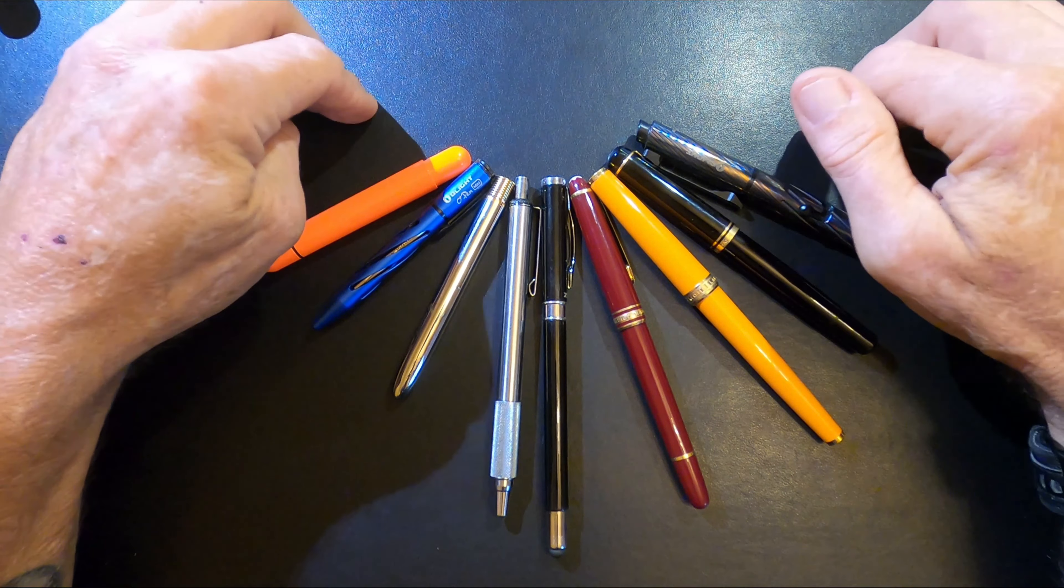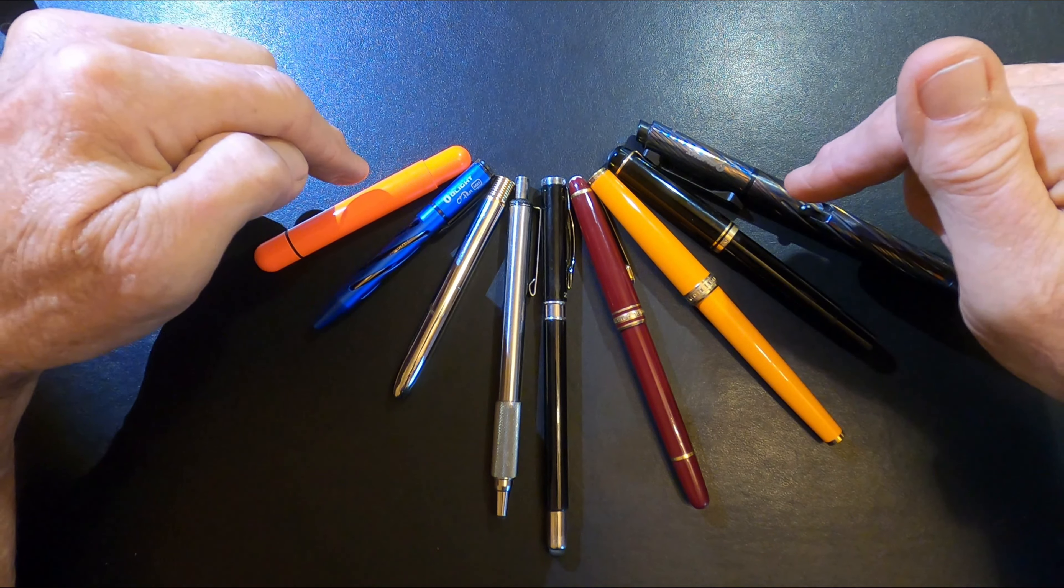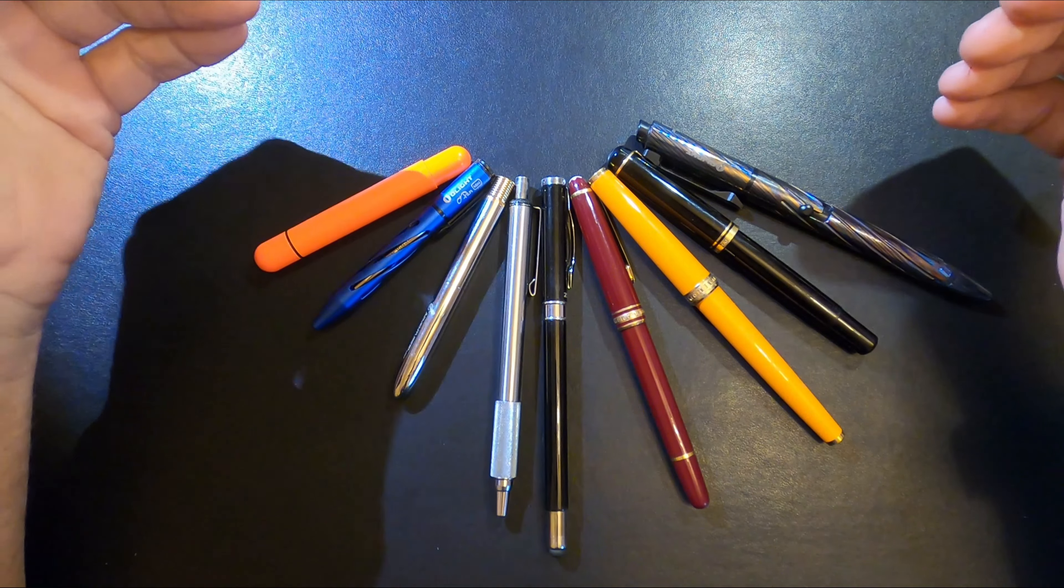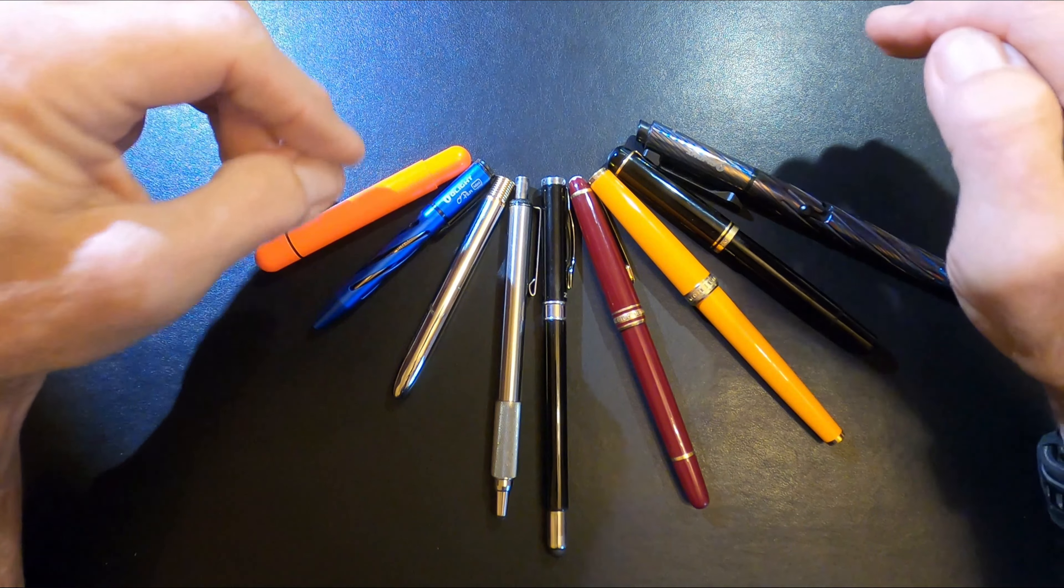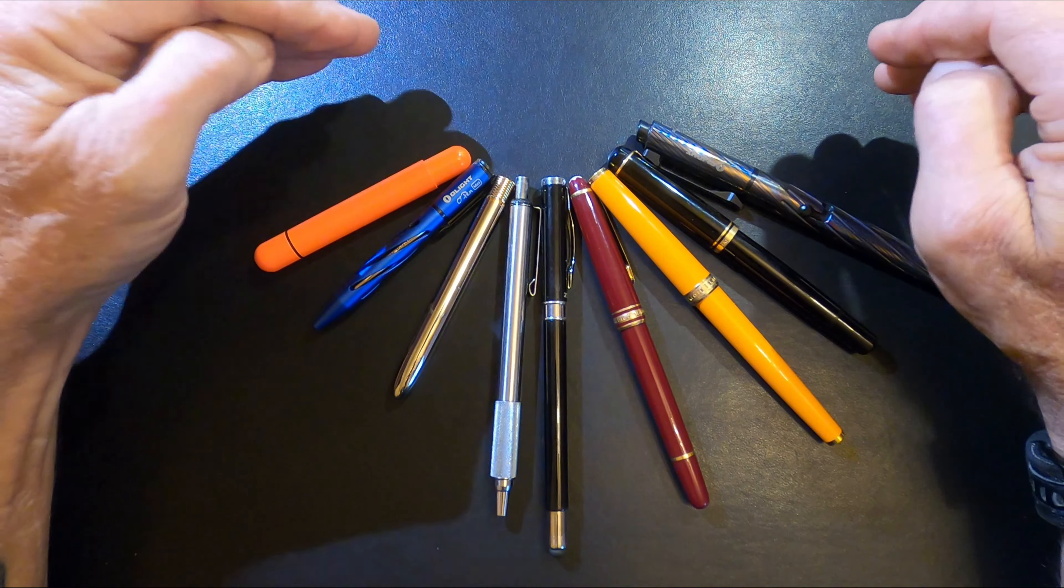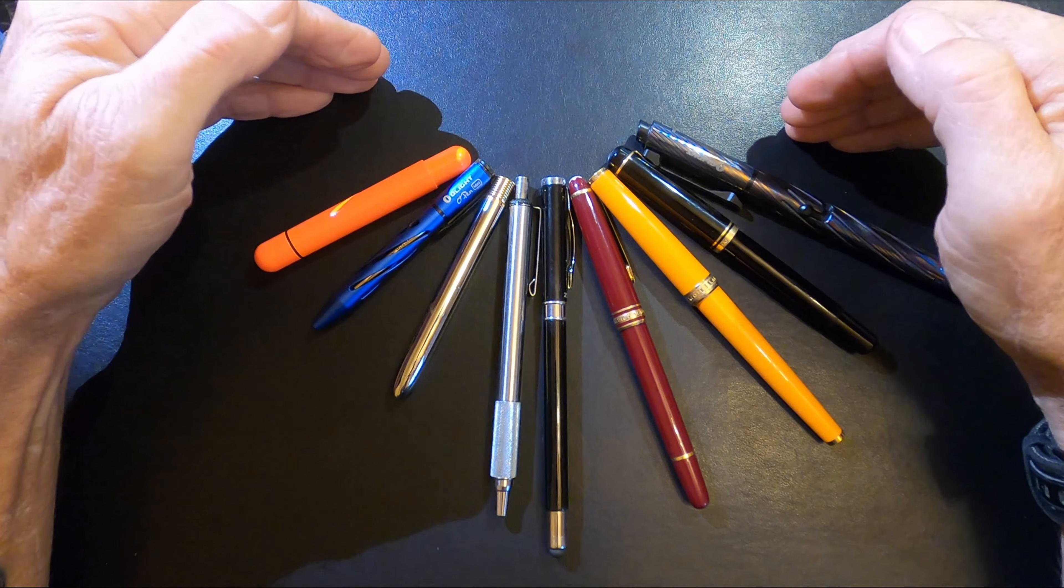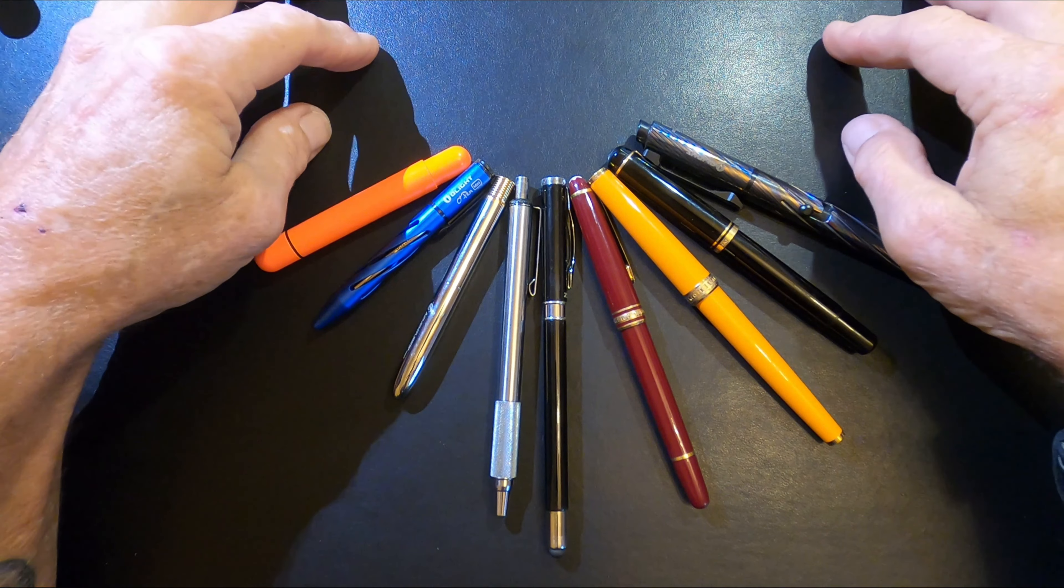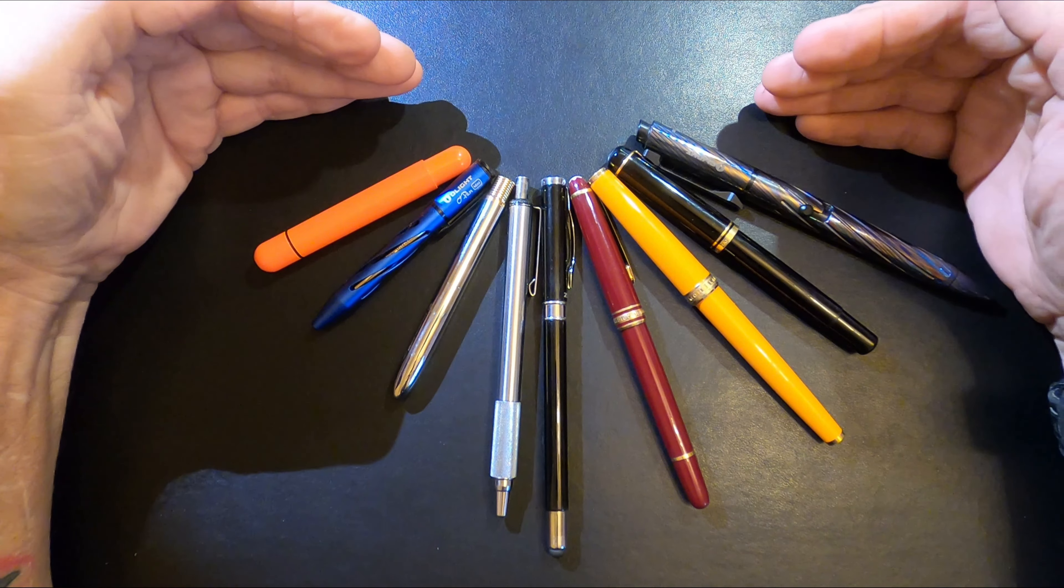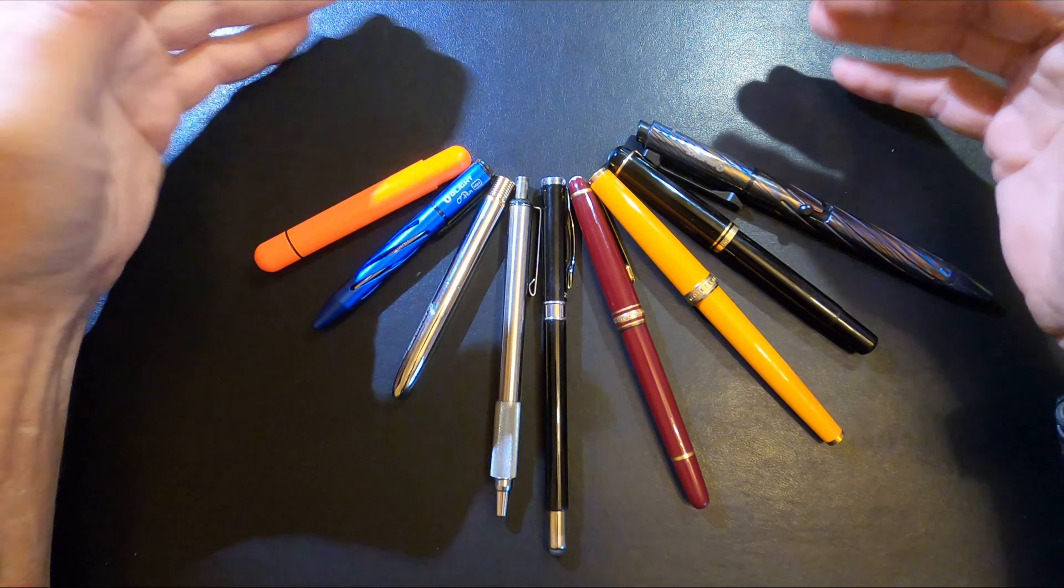This is not sponsored, it's called penworld.com. Most of these pens shown here, with the exception of the two Olights, you can find there at Pen World. Now they're in Antwerp, Belgium, but you place an order, you get your order within seven days. I have never placed an order where I've not gotten it within seven days. This is just a plug for Pen World because I like them so much, and their selection is just over the top if you like fountain pens. They've got just anything you can think of.